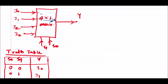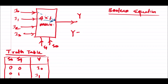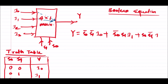The Boolean equation is the relationship between output, inputs, and selection lines. The output y equals: (s0̄·s1̄·i0) + (s0̄·s1·i1) + (s0·s1̄·i2) + (s0·s1·i3). When both selection lines are 00, i0 is selected; when 01, i1 is selected; when 10, i2 is selected; and when 11, i3 is selected.